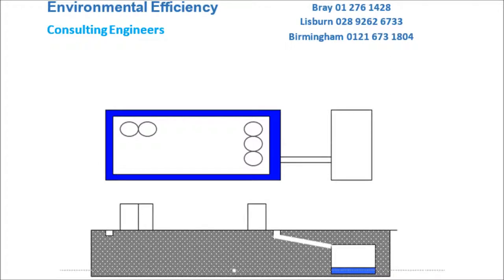The alternative to local containment is remote containment. This may comprise a low kerb around the primary containment and a channel or pipe to transfer any spill to the remote sump, lagoon, or underground tank.